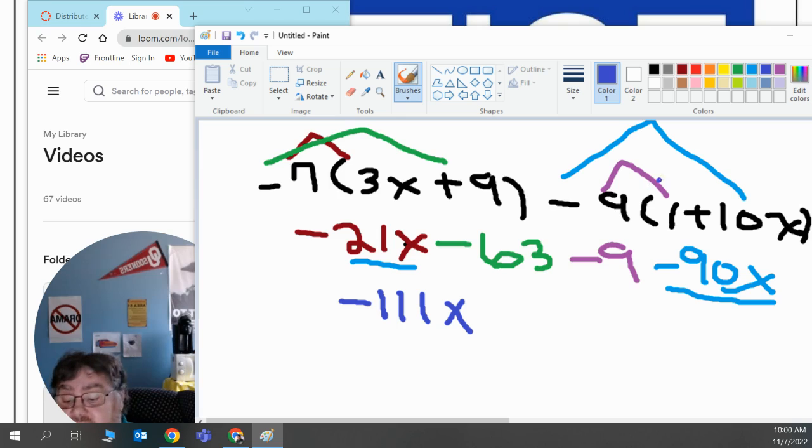Then the next thing I'll do is I'll add the numbers. We have negative 63 and we have negative 9. Negative 63 added to negative 9 is negative 72.